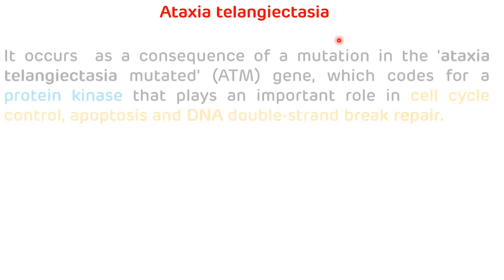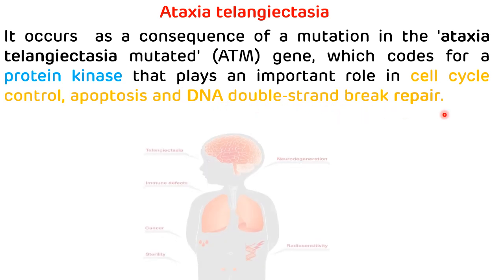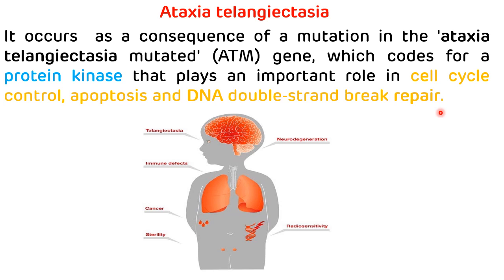An applied aspect associated with double strand break repair is Ataxia-Telangiectasia. It occurs as a consequence of mutation in the ATM gene (Ataxia-Telangiectasia Mutated gene), which codes for an enzyme — PI3 kinase — that plays an important role in cell cycle control, apoptosis (programmed cell death), and DNA double strand break repair. Patients with Ataxia-Telangiectasia present with telangiectasia, neurodegeneration, immune defects, susceptibility to lymphoreticular neoplasms, and sterility.